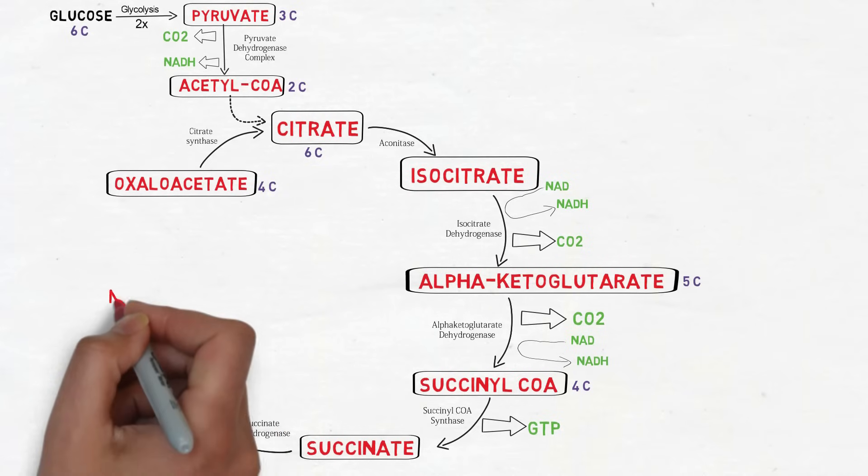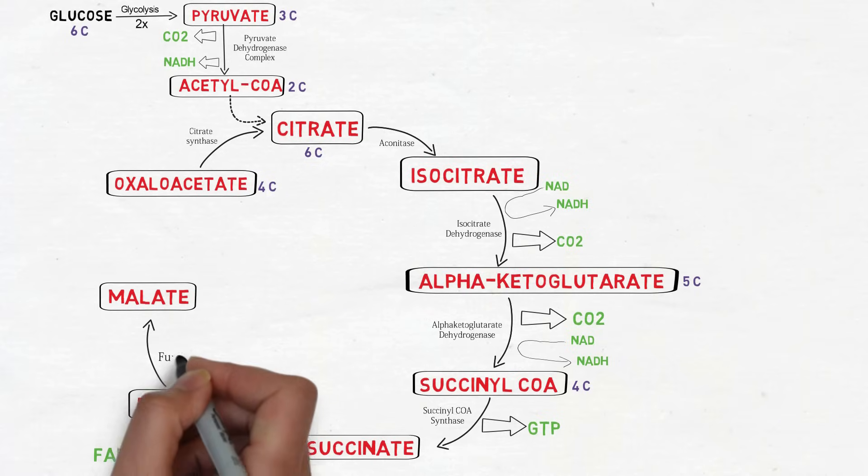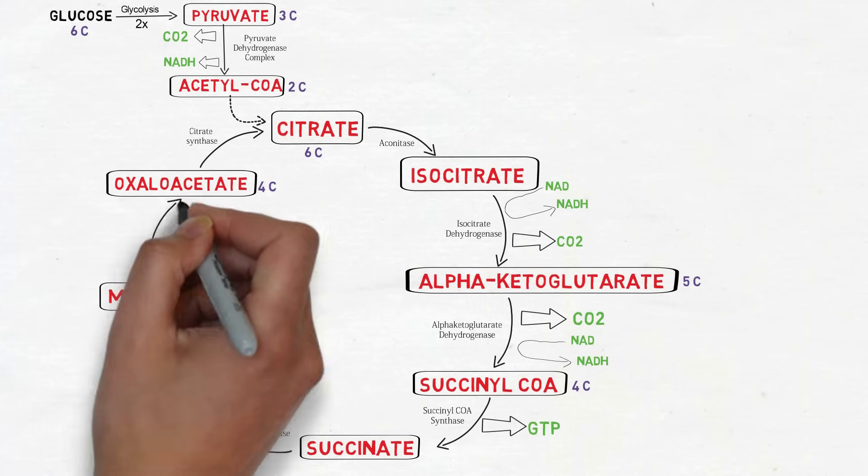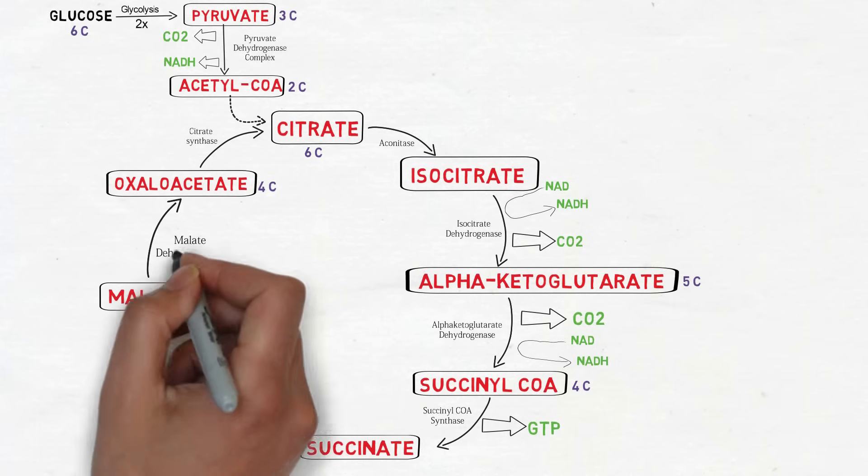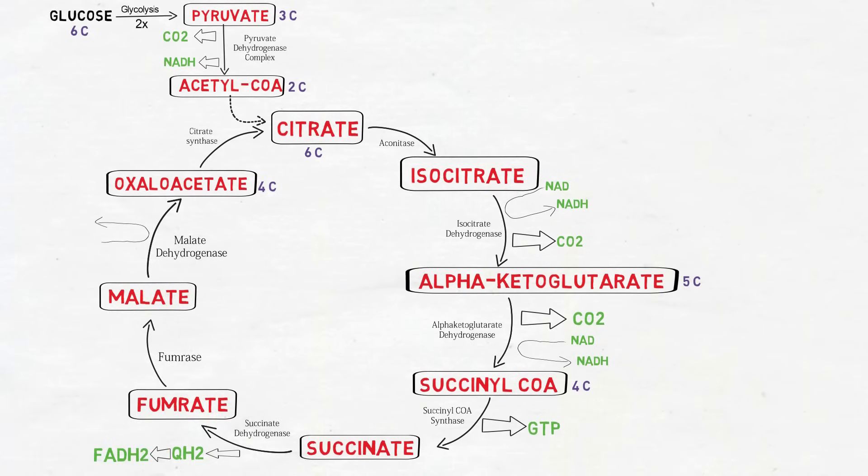Fumarate is then converted into malate by the enzyme fumarase. And in the last step the malate is converted into oxaloacetate by the enzyme malate dehydrogenase. In this reaction also NAD+ is reduced to NADH.